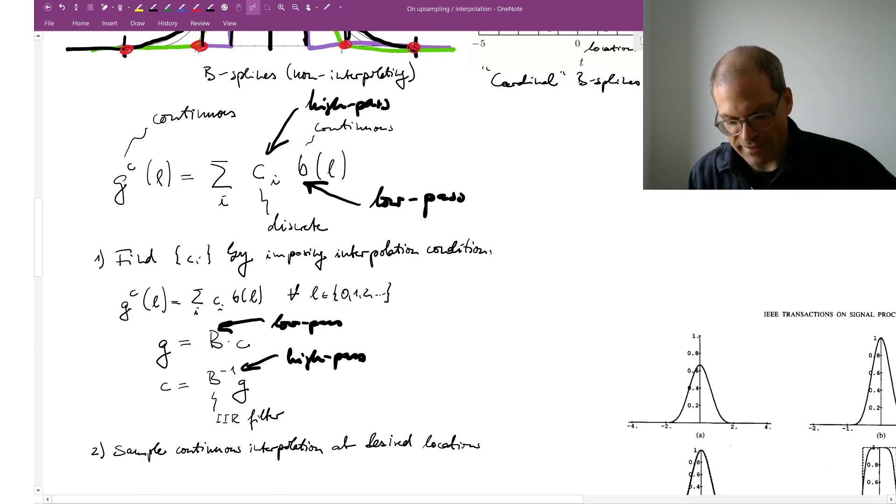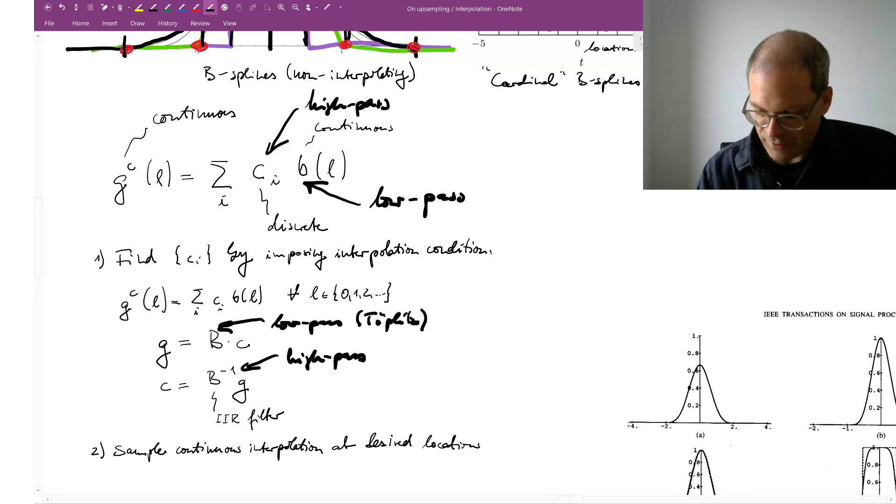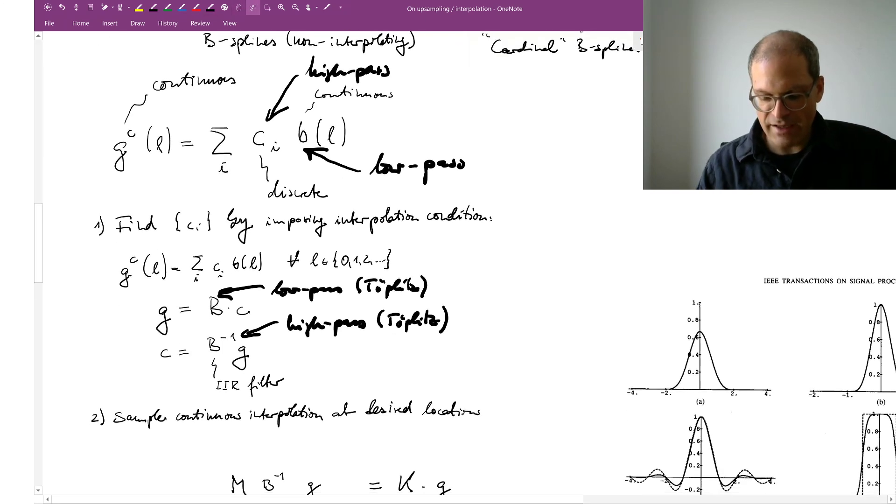Now it looks like when you have a very long signal, let's say g has a million samples, it looks like you need to invert a million by million matrix and that would of course be super expensive if we do it naively. However capital B is Toeplitz or circulant even, and then its inverse is also Toeplitz. And it turns out that we don't need to use here general matrix inversion routines but that we can implement this inversion simply in terms of an IIR filter. IIR stands for infinite impulse response.